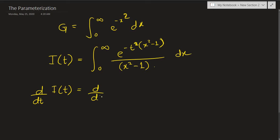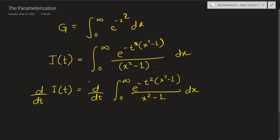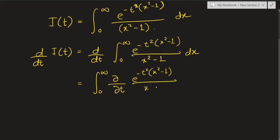So we have d/dt of the integral from 0 to infinity of e raised to negative t squared times x squared minus 1, divided by x squared minus 1, dx. Using the Leibniz rule of differentiating under the integral sign, this becomes the partial derivative with respect to t of e raised to negative t squared times x squared minus 1, divided by x squared minus 1, dx. We can call the derivative of I(t) with respect to t as I prime of t.